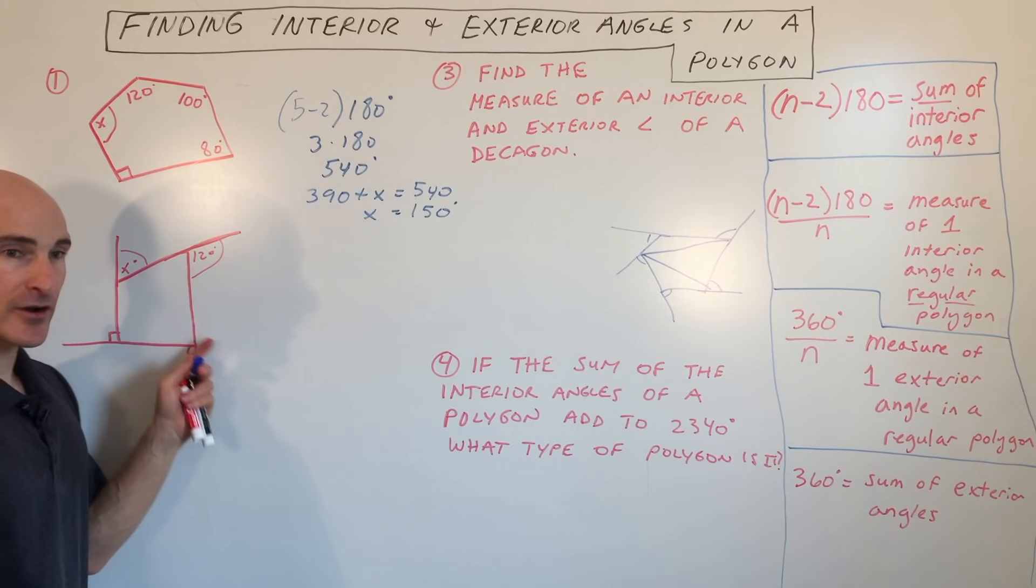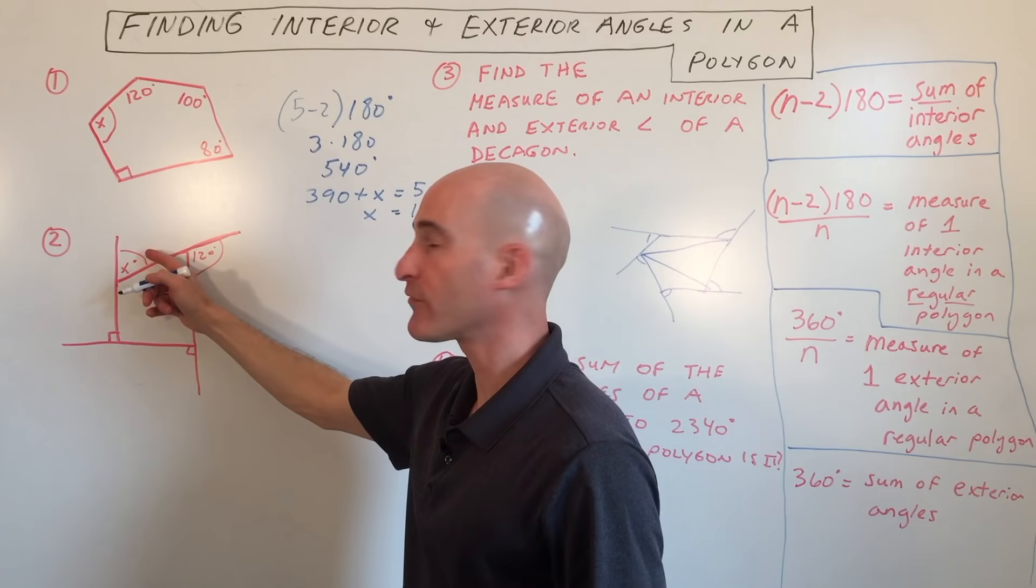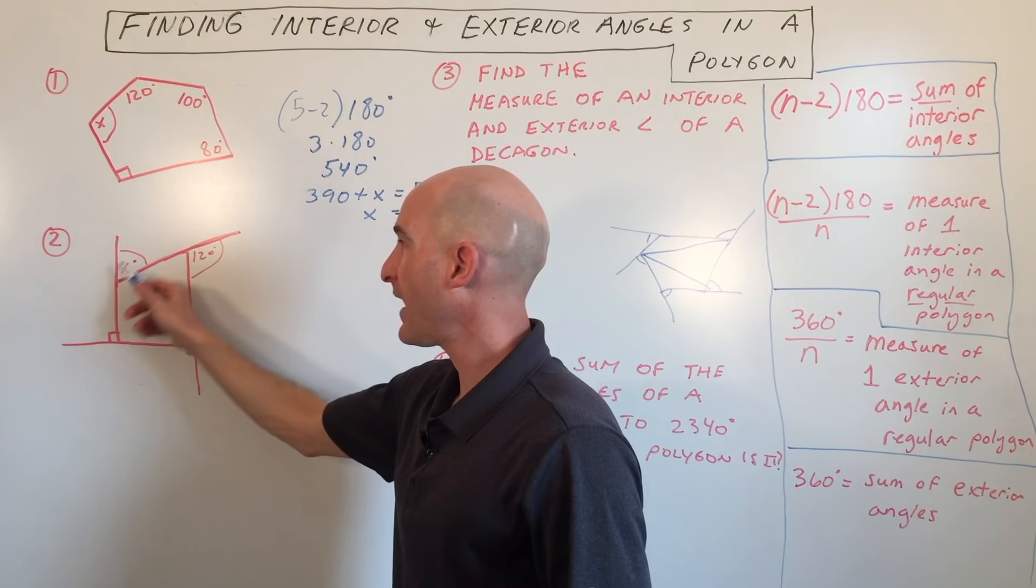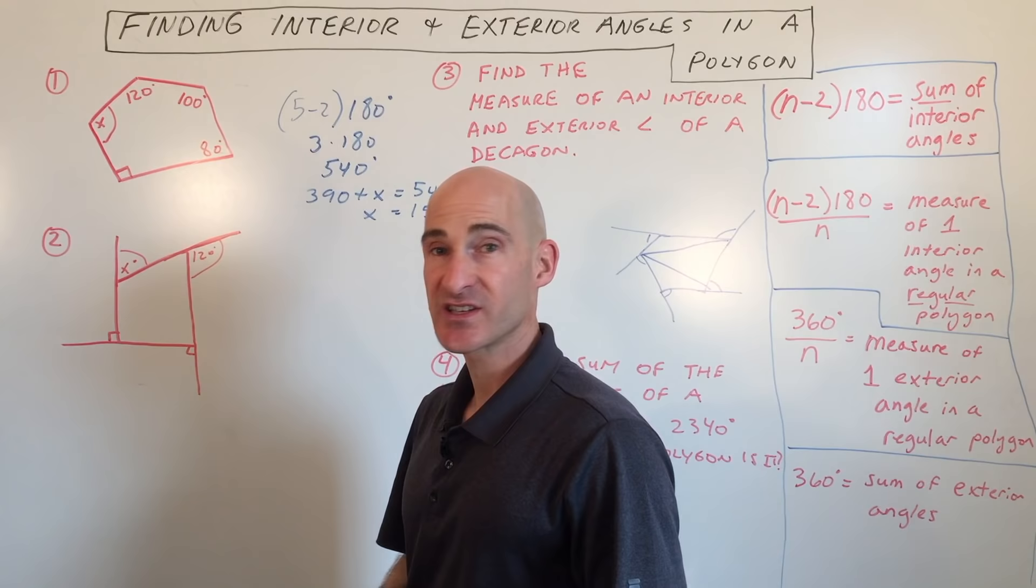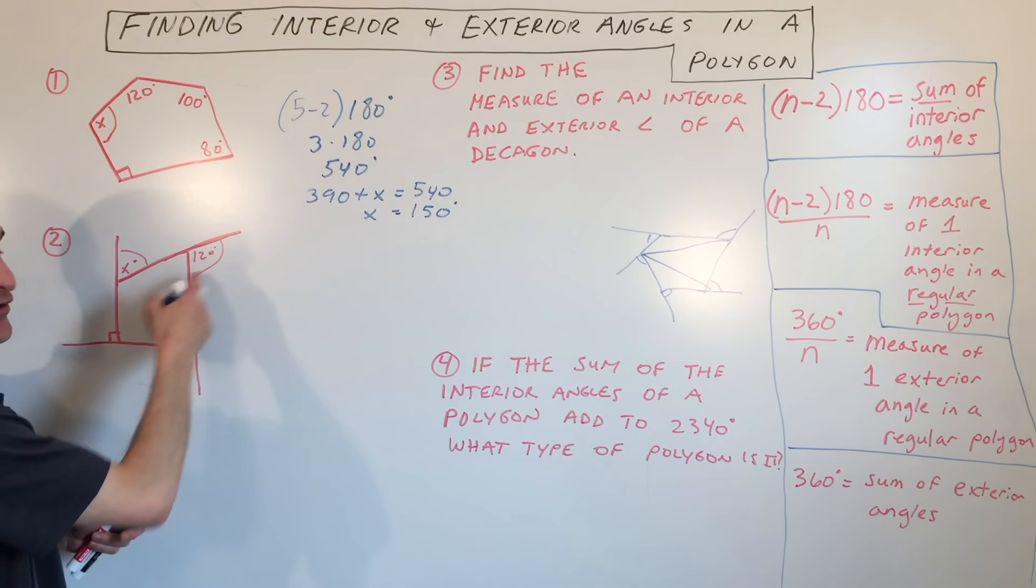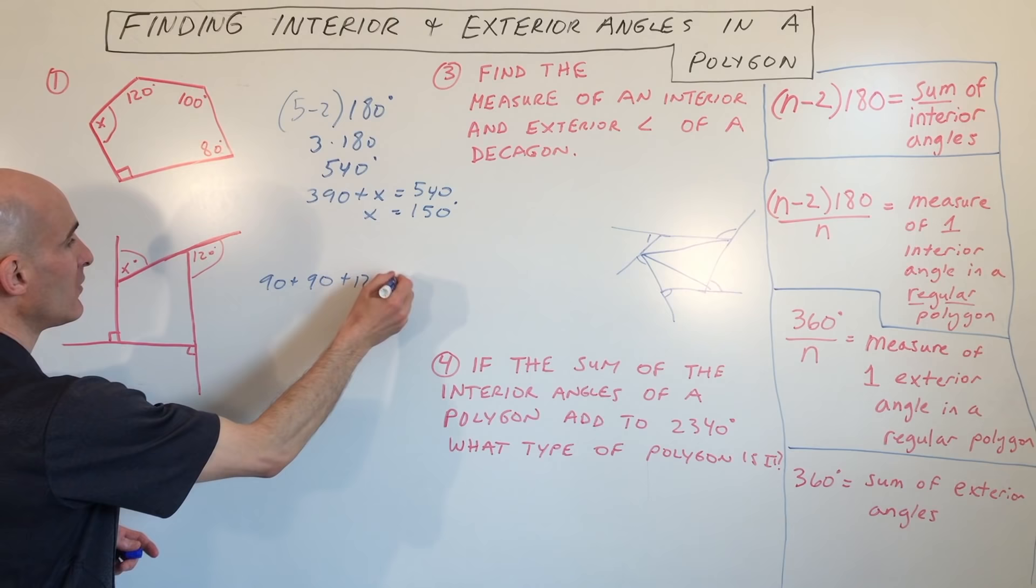Now in this one here, in this polygon here, we're trying to solve for the exterior angle. So what we're going to do here is we're going to add up all the angles, and the exterior angles add up to 360. So in this one, we're just going to go over here and we're going to say, all right, 90 plus 90 plus 120, that's 90 plus 90 plus 120 plus x, this angle here, equals 360.